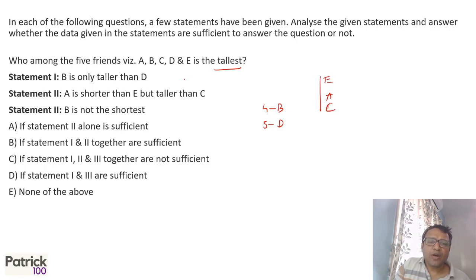If you look at it properly, the first two statements I can combine and get the answer that E is the tallest. B is not the shortest doesn't give you any more information, so the first and second statements can give me the answer. So the answer will be B option.